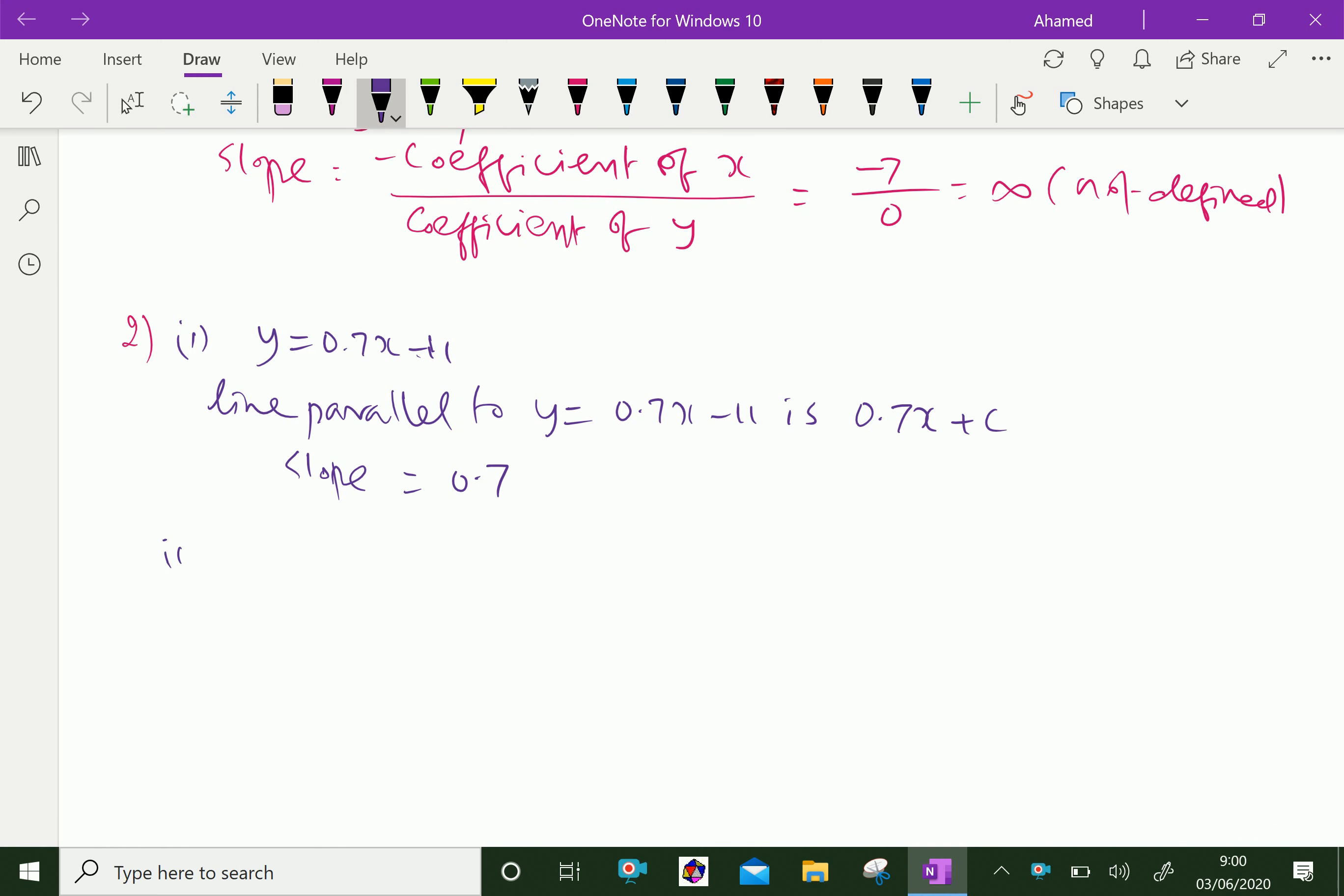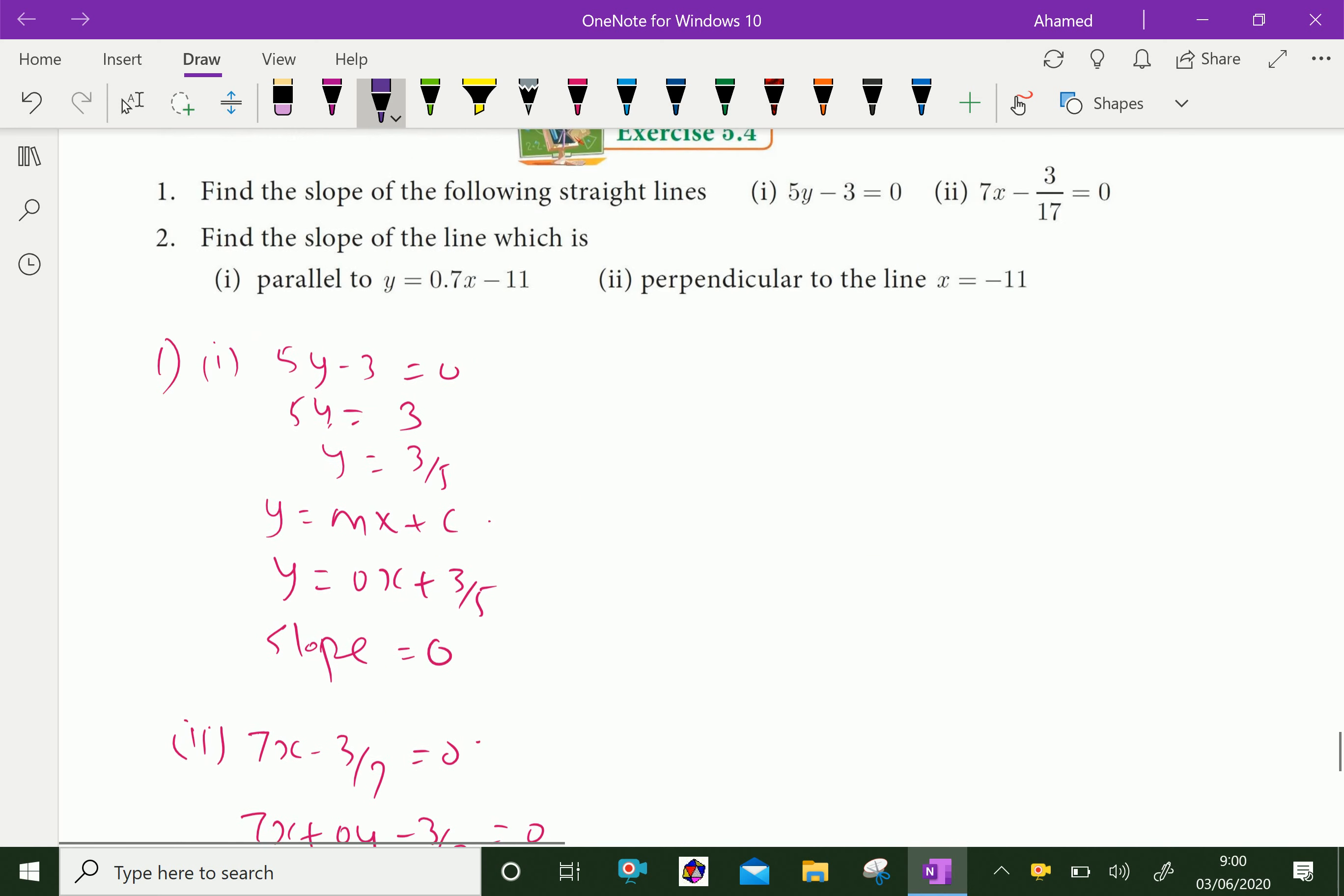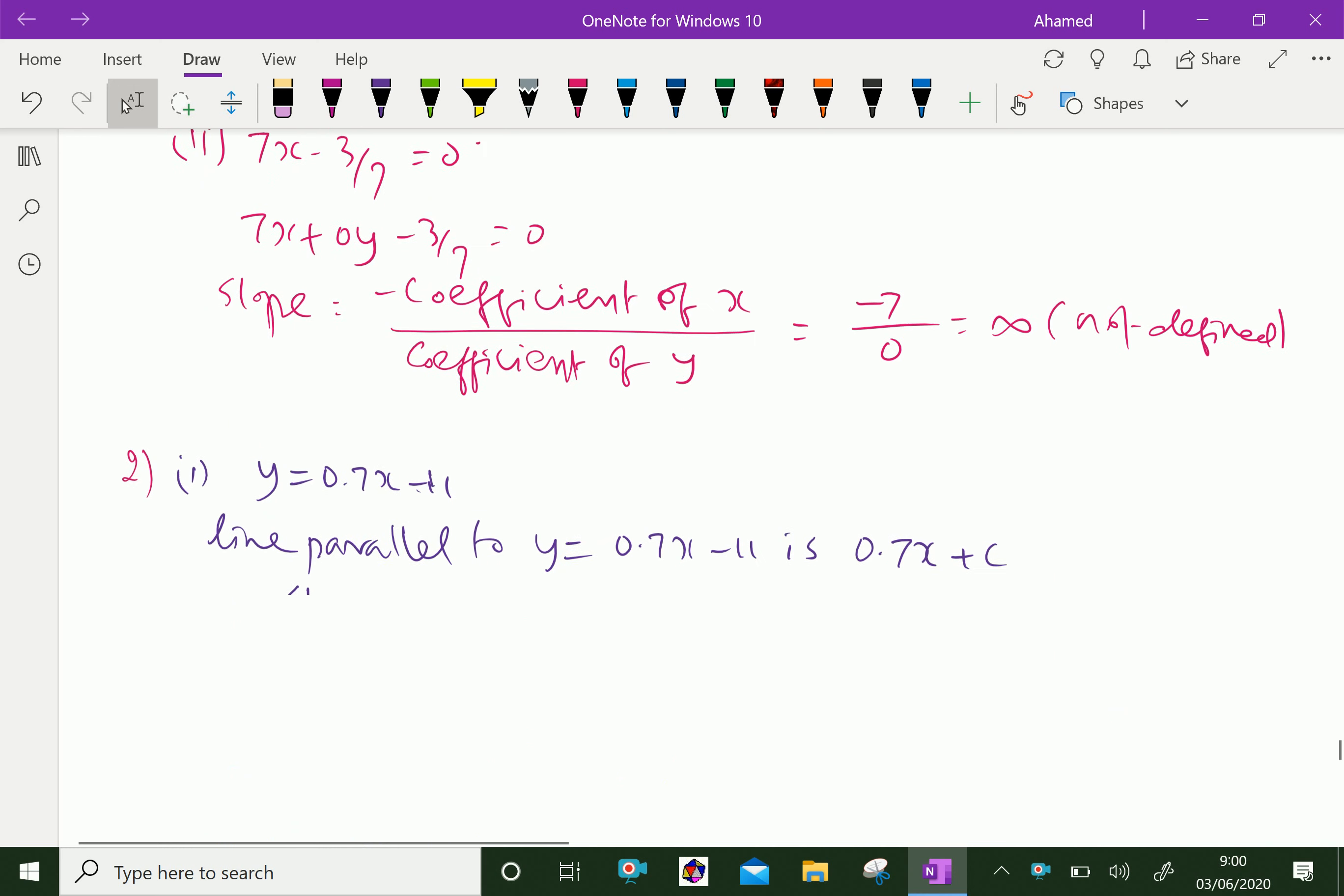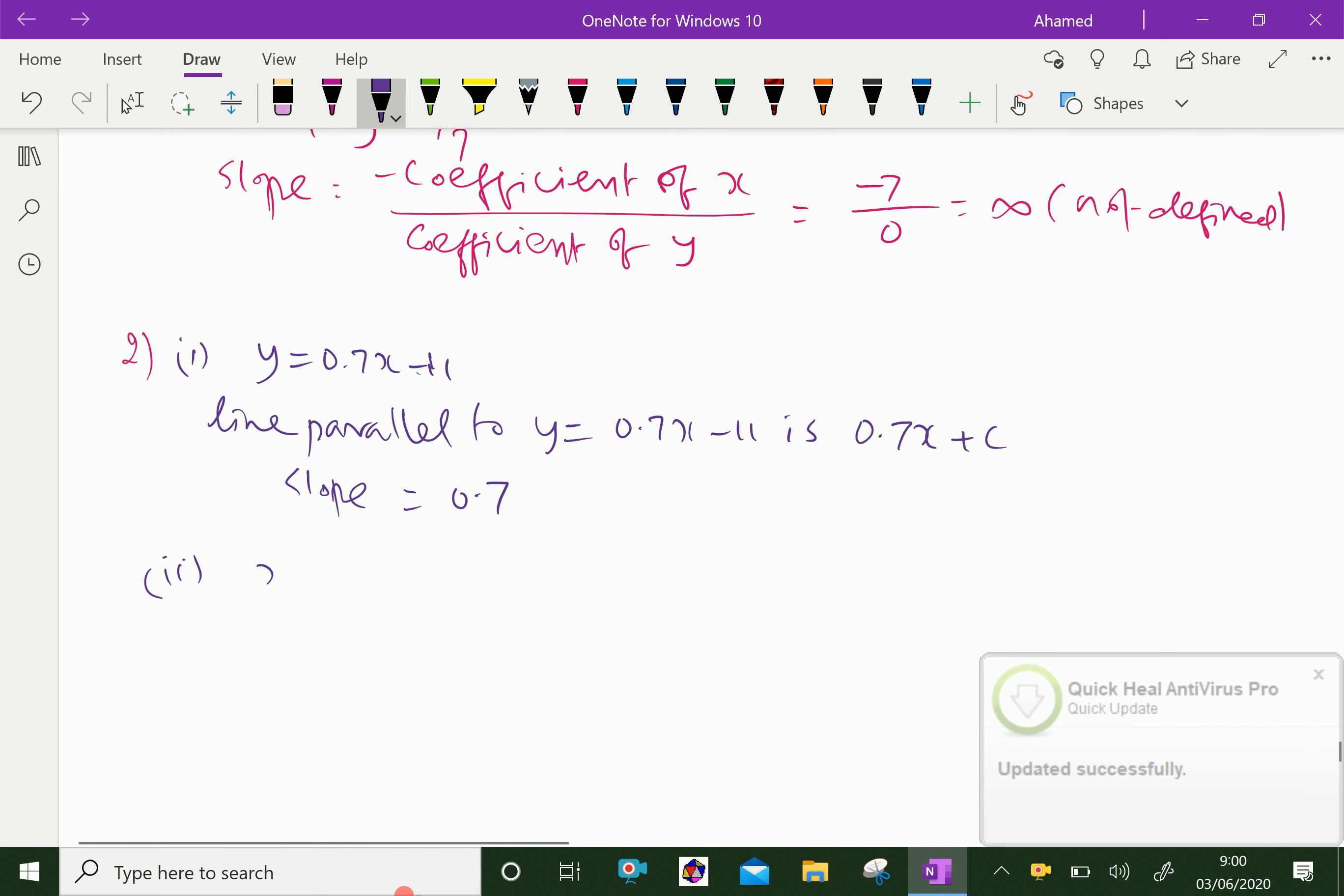Question number 2, second part: perpendicular to the line x = -11. The given line is x = -11.